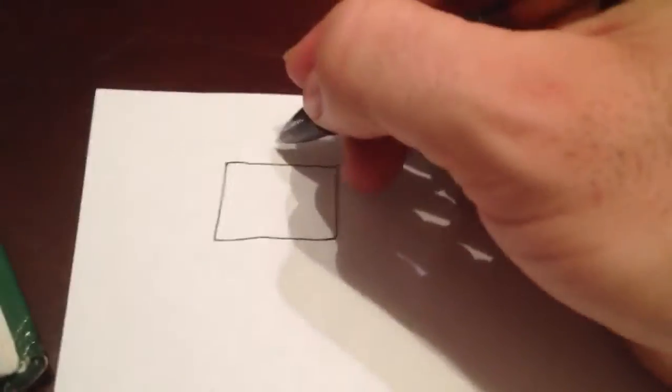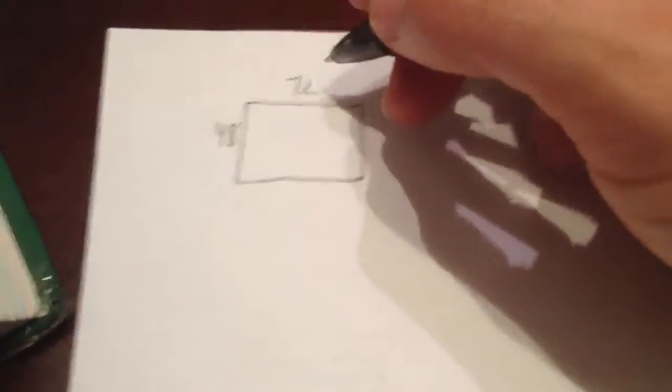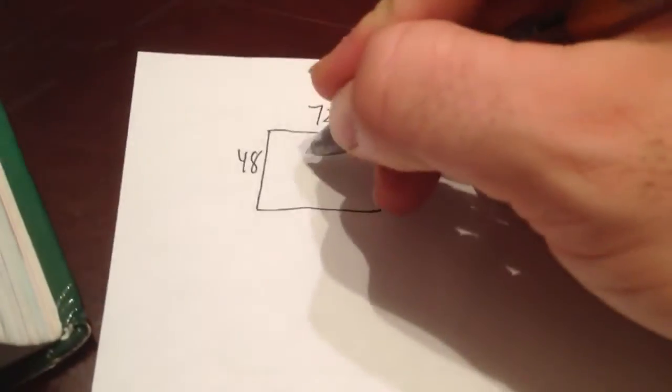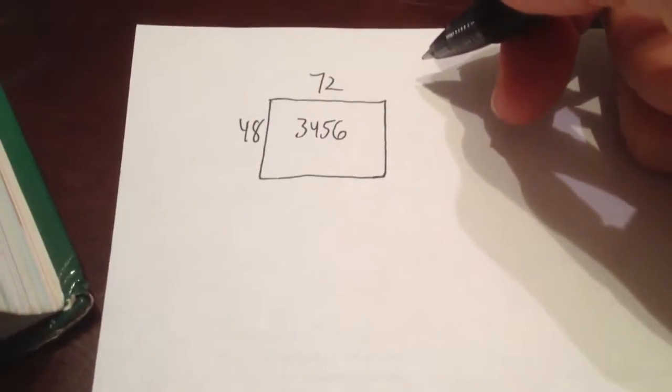The city wants to double the area of a rectangular playground, so you have a rectangular playground that is like so. One side of this playground is 72 feet, the other side is 48, and so they want to double the size of this. The area right now is 3,456. If you multiply those two together, 72 times 48,